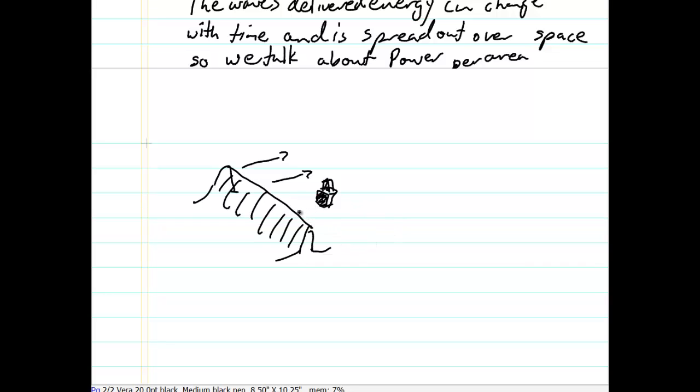Only the amount of the energy that hits here is actually going to be delivered to this object. So rather than talking about the total energy or the total power of this wave, we often want to know how much of it is actually striking this object. So we want to know the power per area, so we can multiply the area of this object to find the power that's delivered.